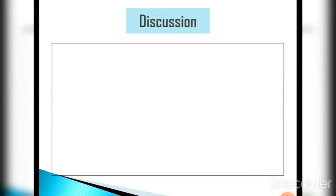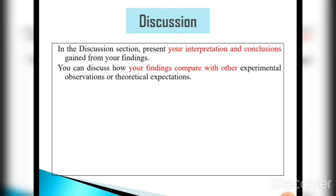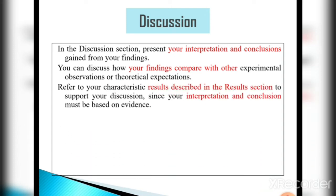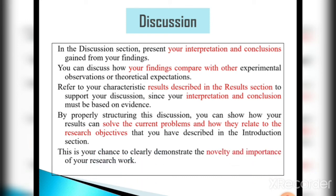The next part is the discussion. Here we have to discuss our work with past research work. In the discussion section, present your interpretation and conclusions gained from your findings. You can discuss how your findings compare with other experimental observations or theoretical expectations. Refer to your characteristic results described in the results section to support your discussion, since your interpretation and conclusions must be based on evidence. By properly structuring this discussion, you can show how your results can solve current problems and how they relate to the research objectives described in the introduction. This is your chance to clearly demonstrate the novelty and importance of your research work.